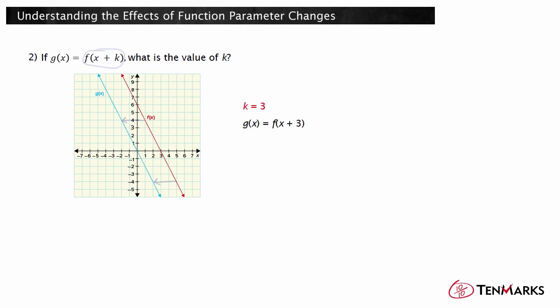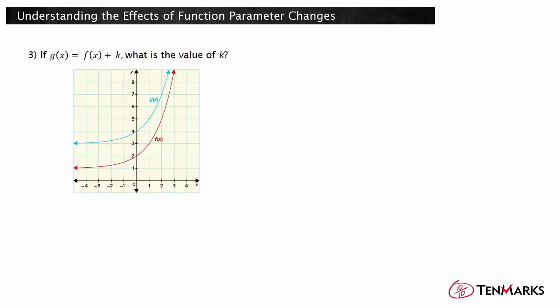Let's look at one more example. If g of x equals f of x plus k, what is the value of k? K is added to the function value, so you are looking for a vertical translation. How far did each point in the graph shift vertically? Each point shifted 2 units up. The shift upwards means that k is positive 2. g of x equals f of x plus 2.